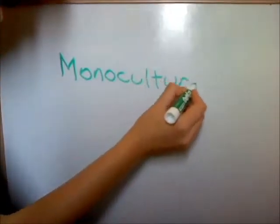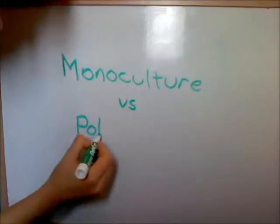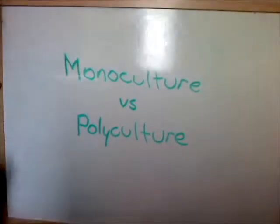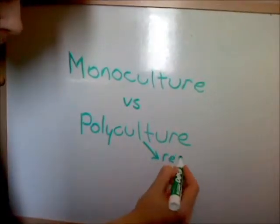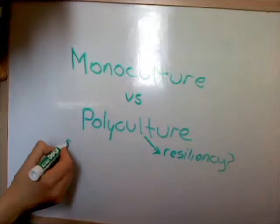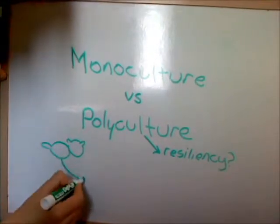In the last permaculture video, we talked about the fundamental difference between monocultural and polycultural food production systems. In that video, you might have asked, what makes the polycultural system so resilient? What makes an ecosystem work so well?